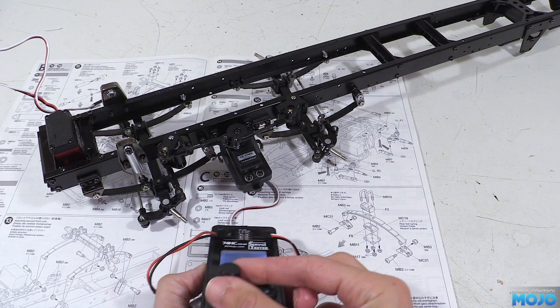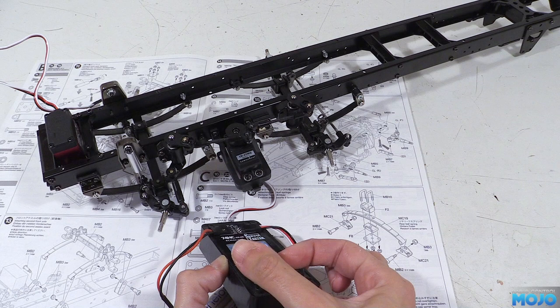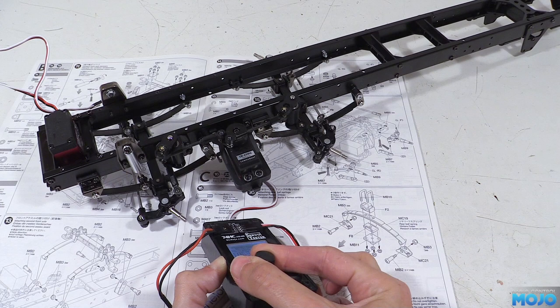Anyway that's all of bag B complete. One set of axles, built and fitted just as Tamiya intended. A bit different to the usual truck yet still rather familiar.